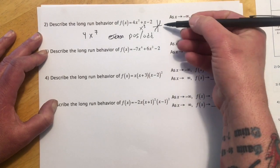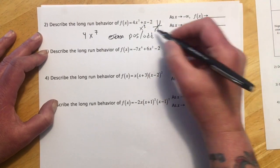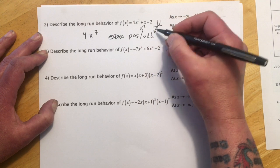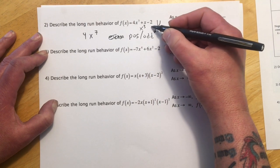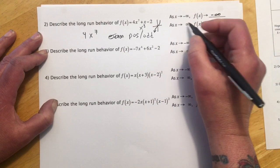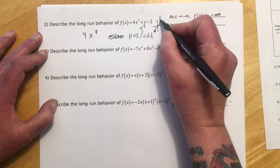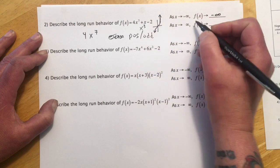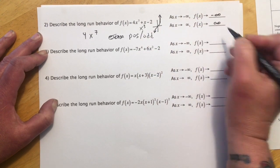So as x goes to negative infinity, which is this way, f(x), the y values, are also going to negative infinity. So as the x's get smaller, the y's get smaller. So here we would say negative infinity. As x goes to positive infinity, so that's this way, the x's are getting bigger than the y values go to positive infinity.